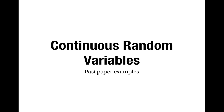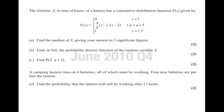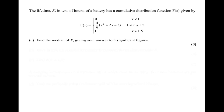This is a video looking at some past paper questions about continuous random variables. The first question is question 4 from June 2010. It tells us that the lifetime x, in tens of hours, of a battery has the cumulative distribution function F given by: F is 0 when x is less than 1; 4/9 times (x² + 2x − 3) when x is between 1 and 1.5; and 1 when x is greater than 1.5. The first part asks us to find the median of x, giving our answer to three significant figures.